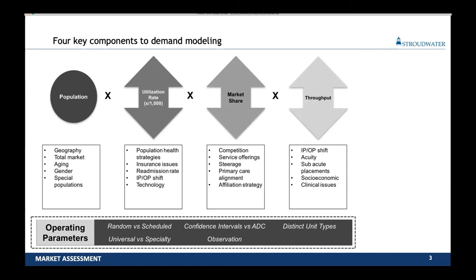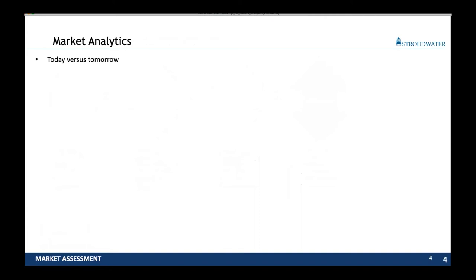That's an area we see a bit more up-and-down toggling. The one where we have the most control is really looking at the throughput side — how fast can we put someone through our facility, what are our hours of operation, days of the week, and what is the shift we'll see from longer surgical cases of the past to shorter cases of the future. All four of those levers together model what types of facilities and how much space we might need. So when we think about market analytics, we're really asking: what is today versus what might tomorrow look like?